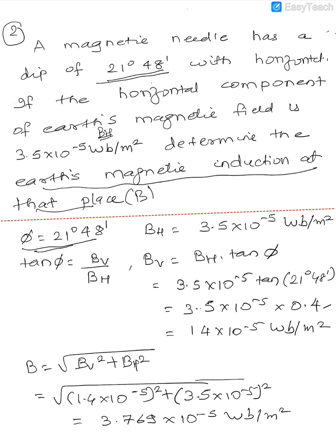We need to find B. So Bv by Bh is tan phi. Therefore Bv is equal to Bh times tan phi. Tan of 21 degrees 48 minutes is 0.4. So I multiply 1.4 times 10 raised to minus 5 by 0.4, giving 1.4 times 10 raised to minus 5 weber per meter square. This becomes Bv.